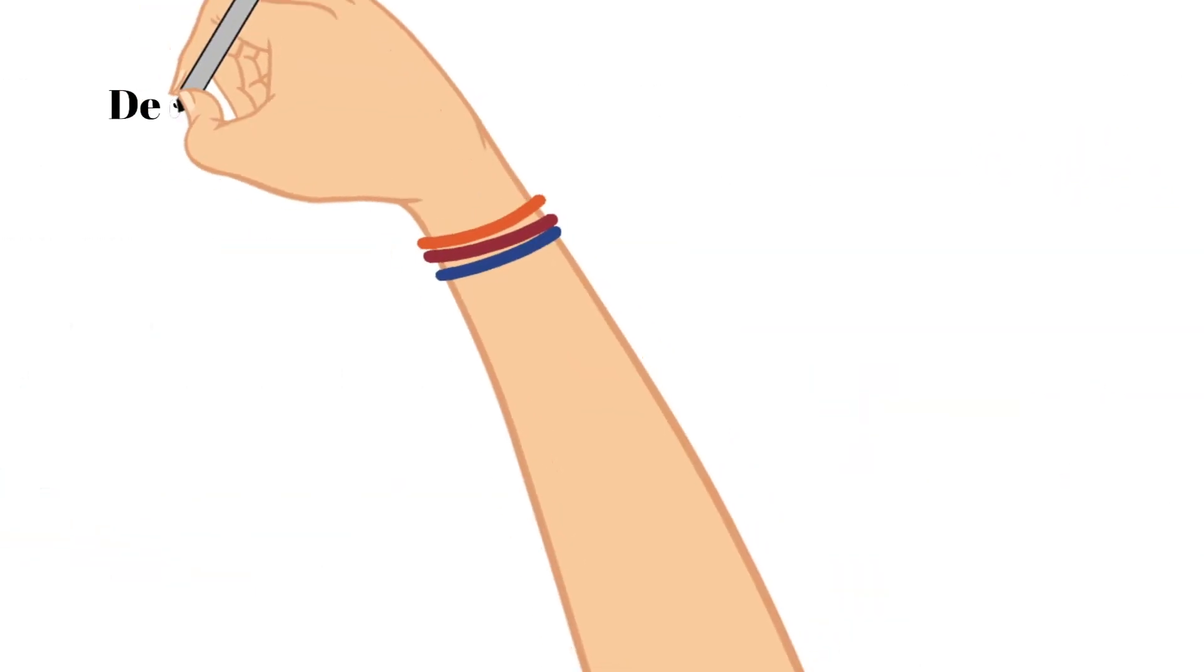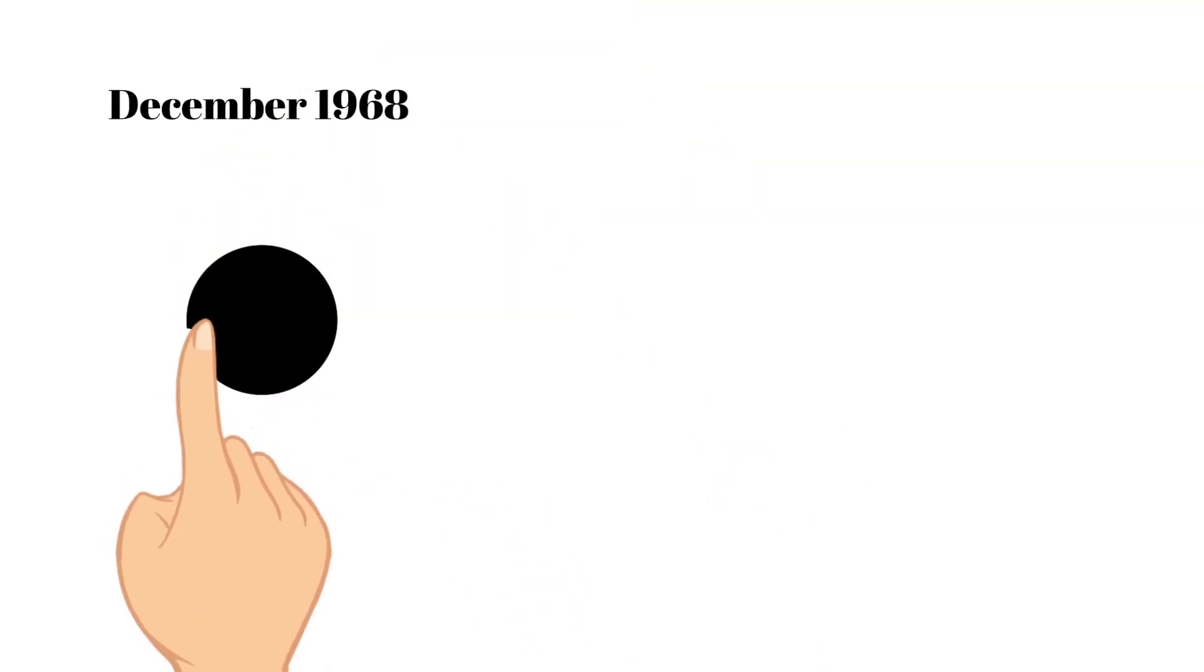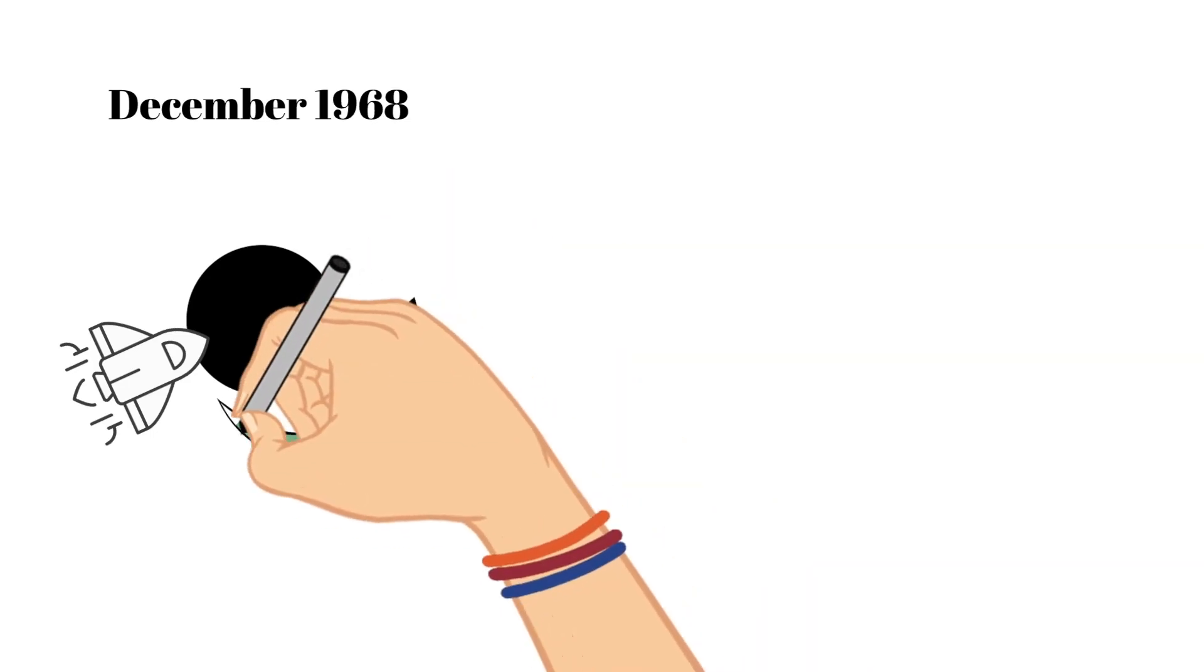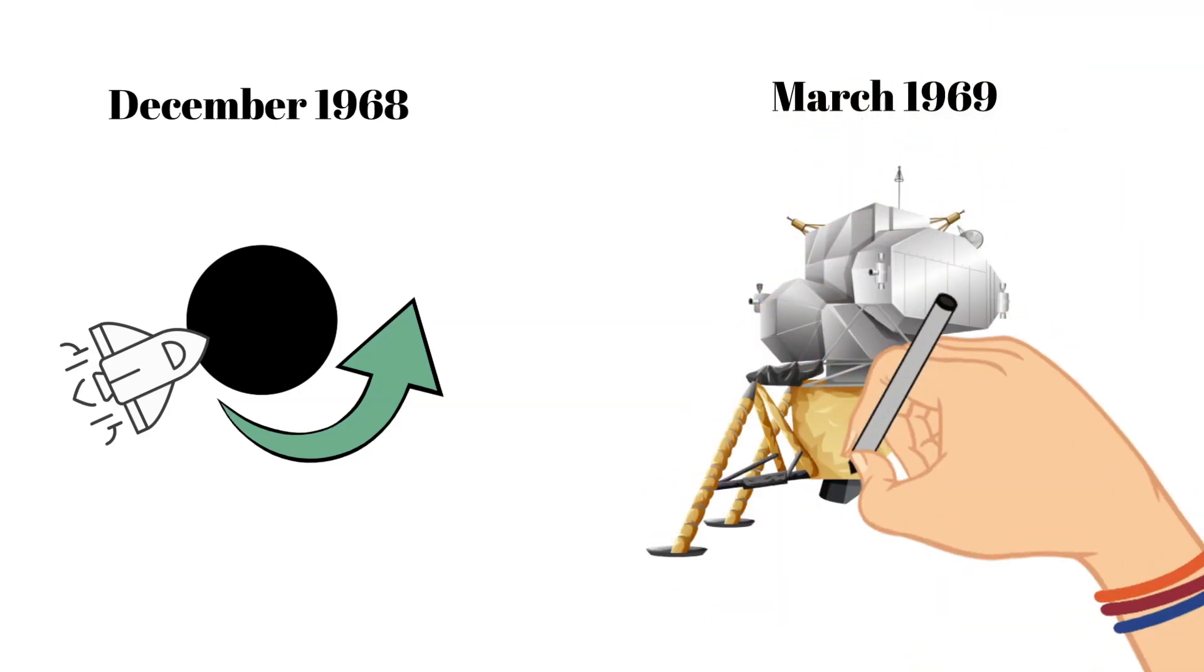In December of this year, Apollo 8 took three astronauts as far as the dark side of the moon and back. And then in March of 1969, Apollo 9 tested the specific lunar module for the first time while it was orbiting Earth.